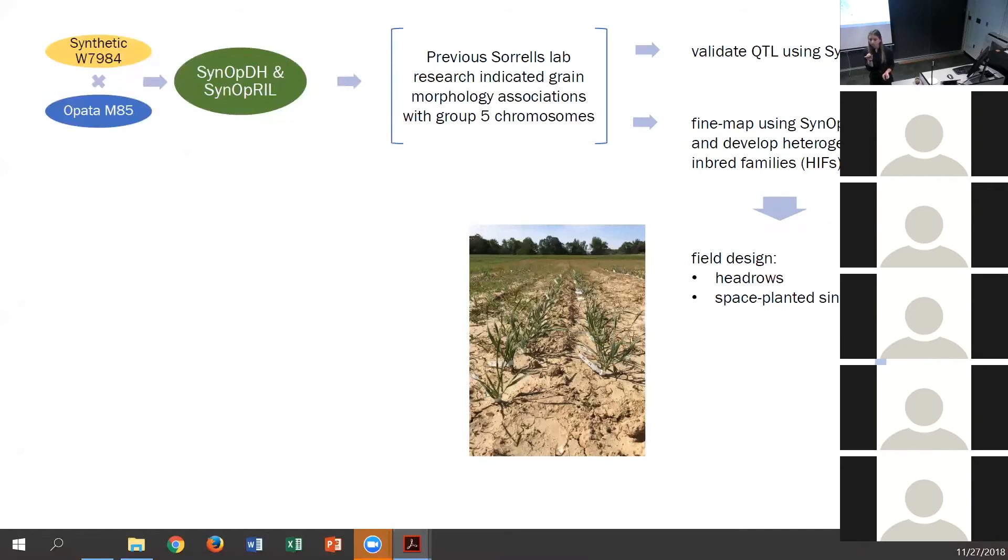All of these plants are field grown. We've been working with the doubled haploids and the HIFs in the fields since 2016, and they're planted in head rows for the doubled haploids, but we have to plant the HIFs as individual space-planted rows because they're segregating again, and we tagged them individually, as you can see here, so we can keep track of them for all of our phenotyping and genotyping purposes.